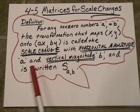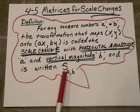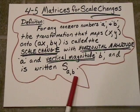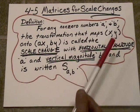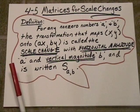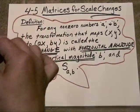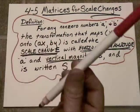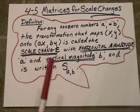For any non-zero numbers A and B, the transformation that maps the point x comma y onto A times x comma B times y is called the Scale Change Transformation. The thing that's neat is your A and your B, as long as they're not zero, they can be big, they can be small, and we're going to shrink or expand the figure depending upon what these coefficients turn out to be.